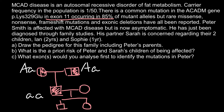If their mother were homozygous dominant (capital A, capital A), there would be no way for the children to be affected — they would have 100% probability of being heterozygous. If the mother's genotype is capital A capital A and the father's is small a small a, all children would be phenotypically normal carriers. So in order to find the probability of being affected, we must assume the mother is a carrier.